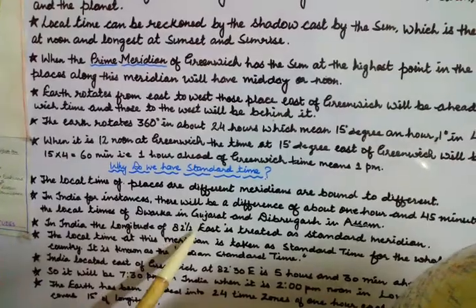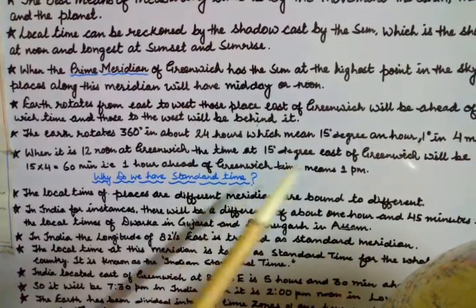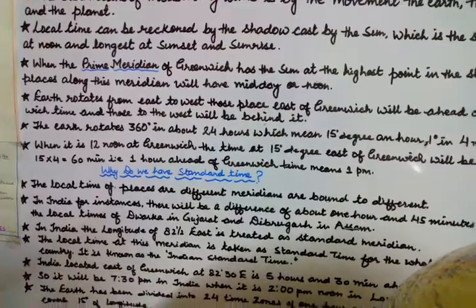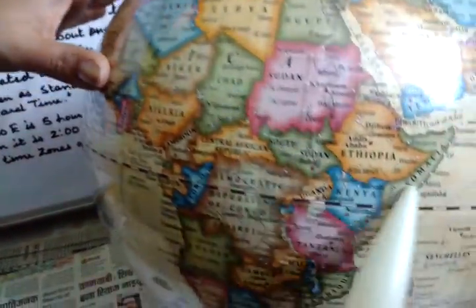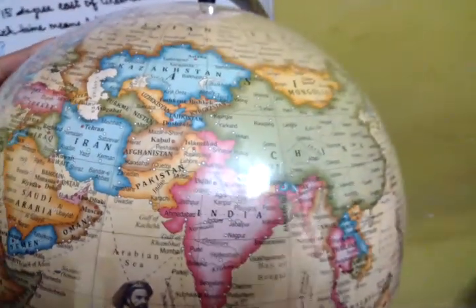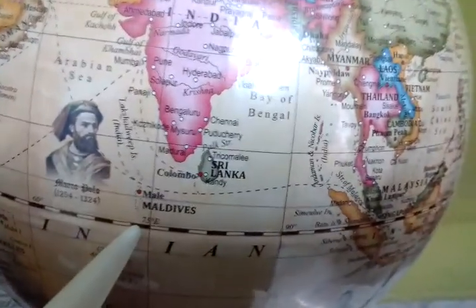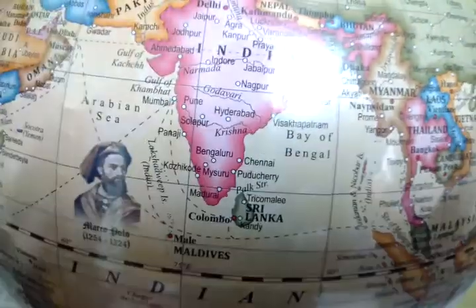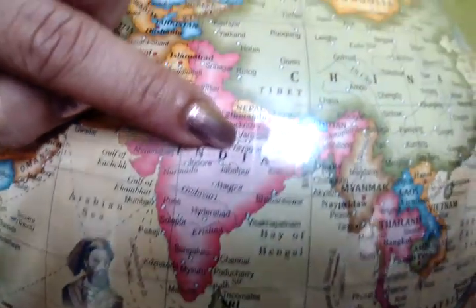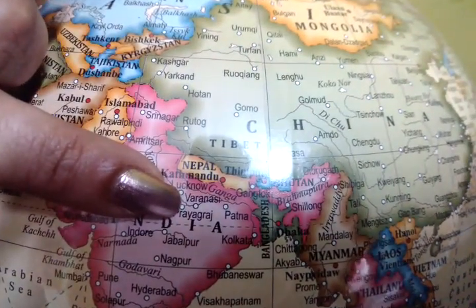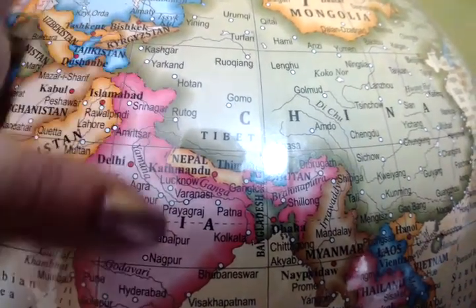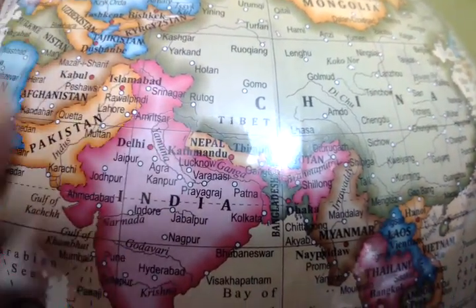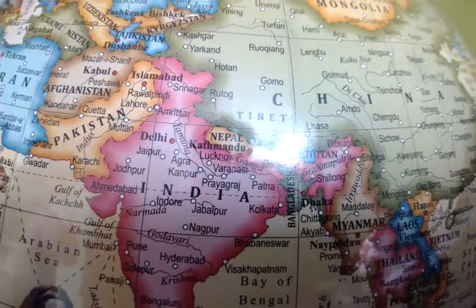In India, the longitude of 82 degrees 30 minutes east is treated as the standard meridian. Moving east from the prime meridian, India lies at 82.5 degrees. There is a city called Mirzapur near Prayagraj where this meridian crosses — and according to that, our local time is fixed.